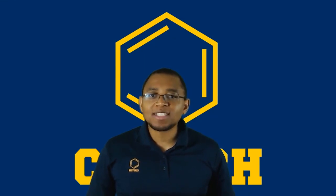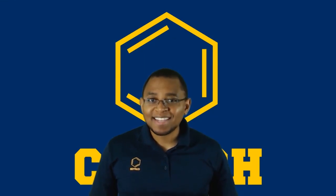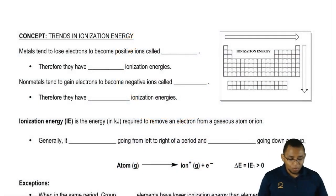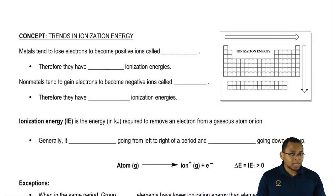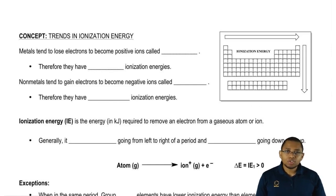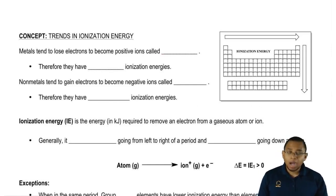In this new video, we're going to take a look at ionization energy. We're going to say that metals tend to lose electrons. If you're losing negatively charged electrons, then you become a positive ion called a cation.